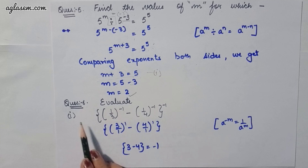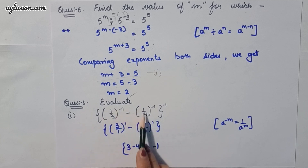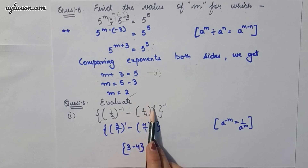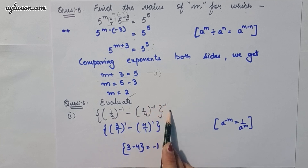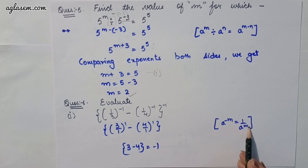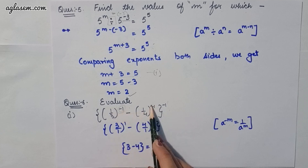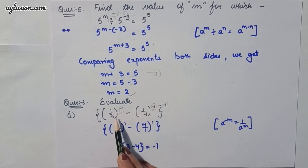Moving to the sixth question: evaluate. Part 1 is (1/3^(-1) - 1/4^(-1))^(-1) whole power minus 1. Applying a^(-m) = 1/a^m, we convert the terms — 1/3^(-1) becomes 3, and 1/4^(-1) becomes 4 — and we get the answer minus 1.